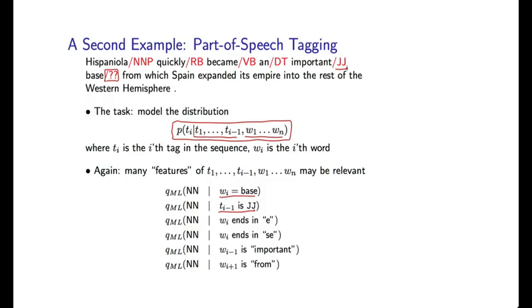We could condition on prefix or suffix information about the word being tagged. I could condition on the fact that w_i ends in the single letter e, or the fact that w_i ends in the pair of letters s followed by e. I could condition on surrounding words in this case. I could condition on the fact that the previous word is important, or I could condition on the fact that the next word is the word from. Again, if we continue with this example, any one of these features of the previous context could be useful in predicting the distribution over the tag at the i-th position. And we could, once again, come up with a method based on linear interpolation, the old method for smoothing we saw within the context of trigram language models. But it would quickly become really unwieldy as you incorporate more and more sources of information.